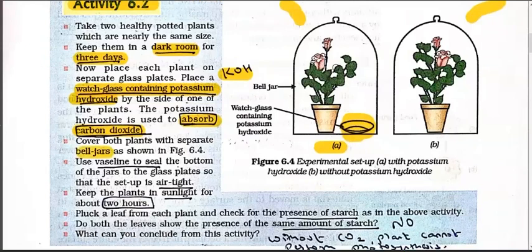Cover both plants with separate bell jars - the glass covers on top are called bell jars - as shown in the figure. Use vaseline to seal the bottom of the jar to the glass plate so that the setup is airtight. Wherever there were open areas, apply vaseline gel there.